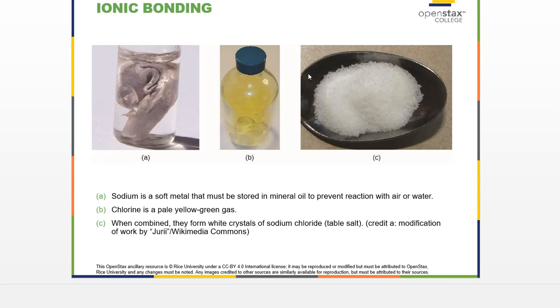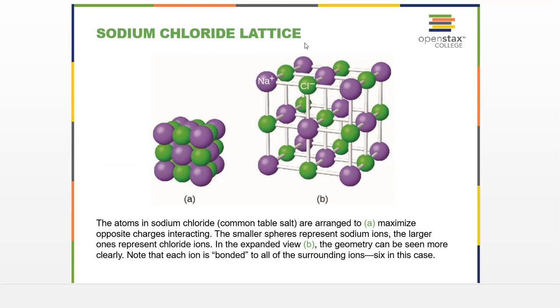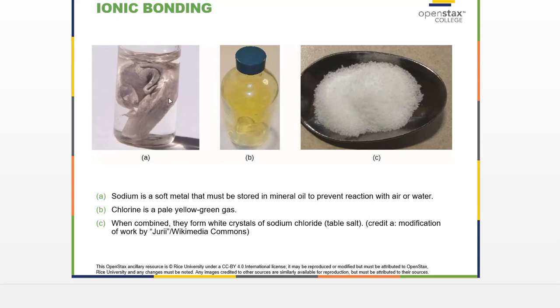Note that this is different than the macro view of sodium chloride. This is what table salt looks like, but this is what the atoms, which you can't of course see, inside of table salt. This is how they're arranged. It's also important to note that table salt has very different properties from what it's made out of, sodium and chlorine gas.